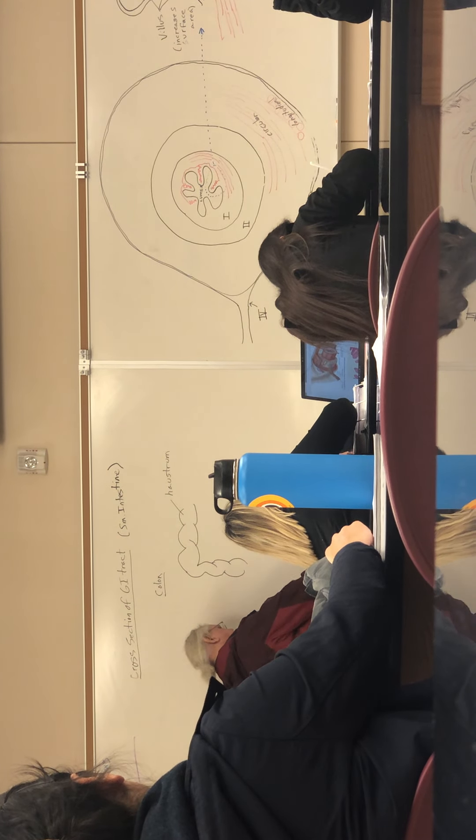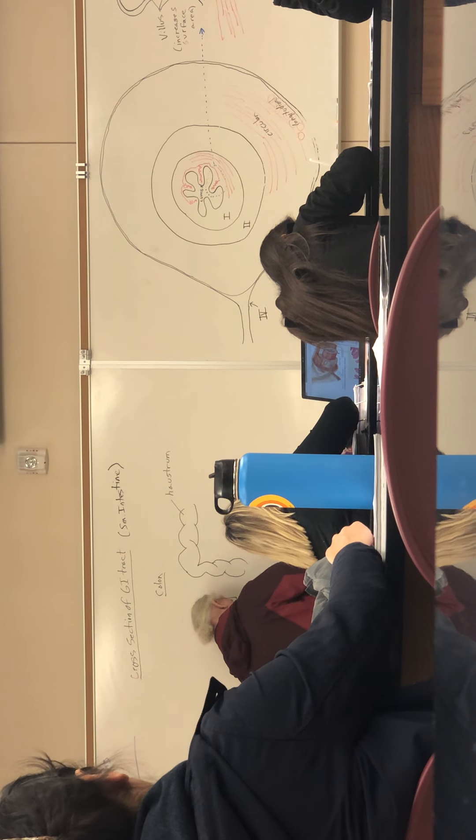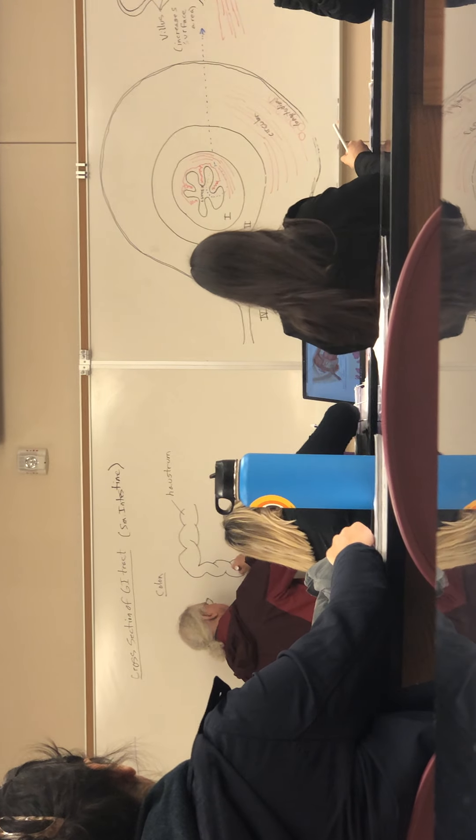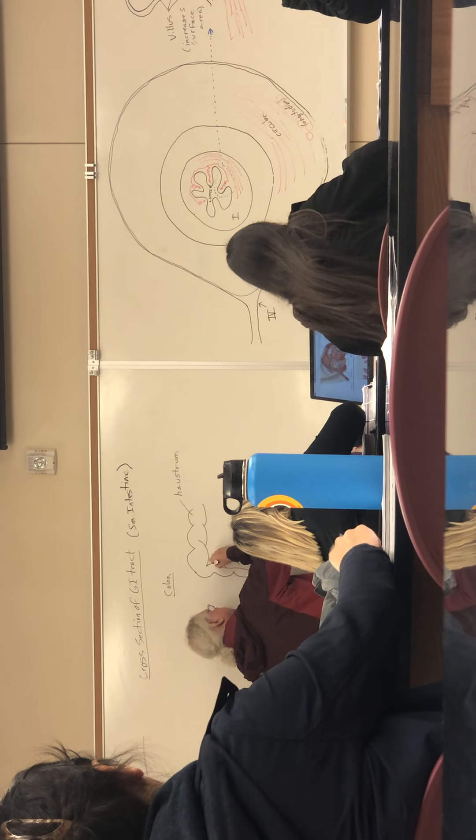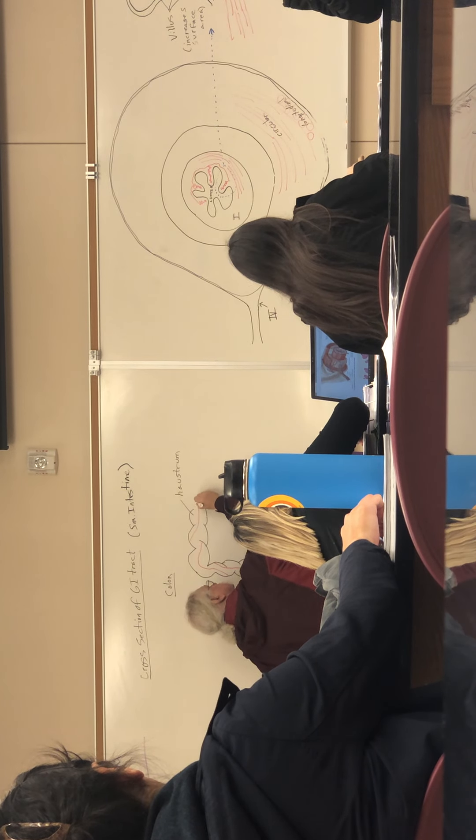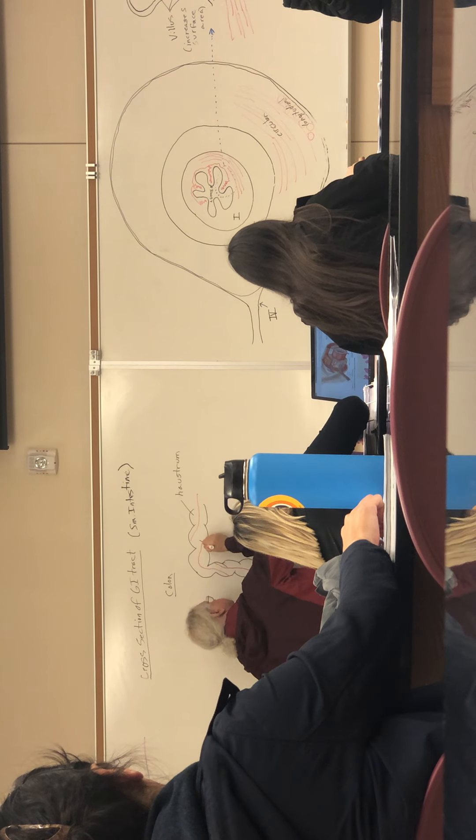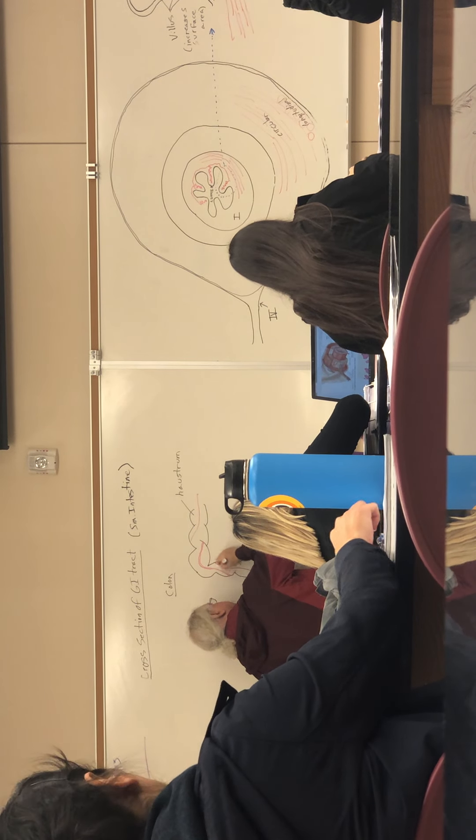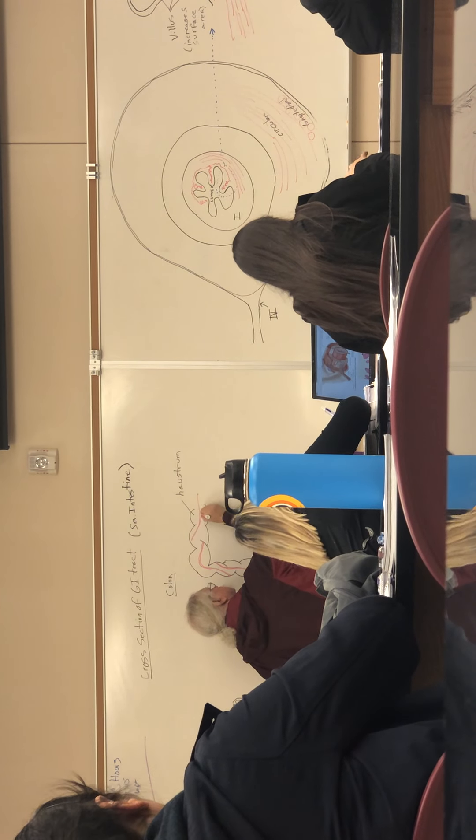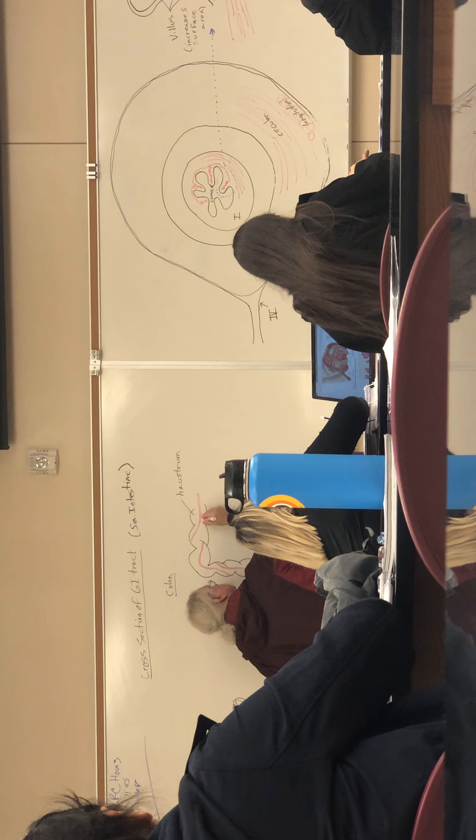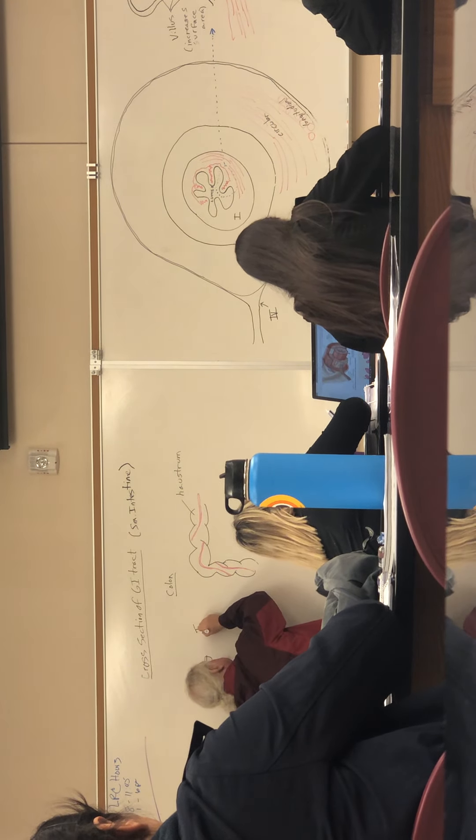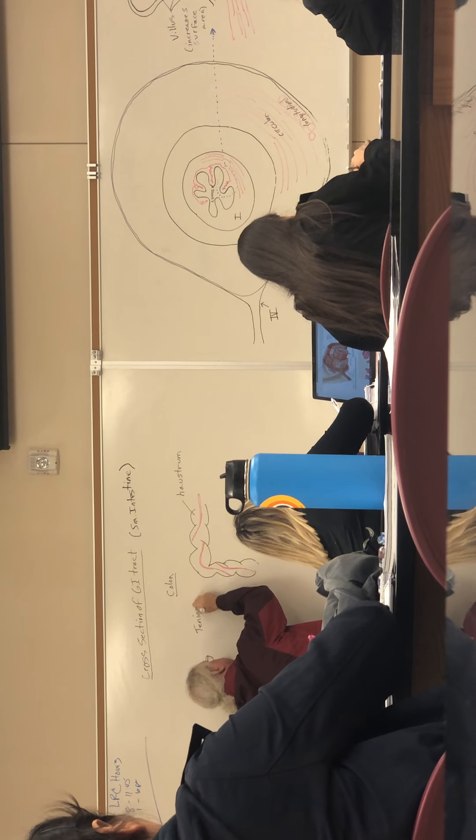But in this, the muscle—I guess I should try to stick with the red and bother it last. The muscle is in three bands. The bands are wider than drawn, so I want to increase the size. These are called the Taenia Coli.